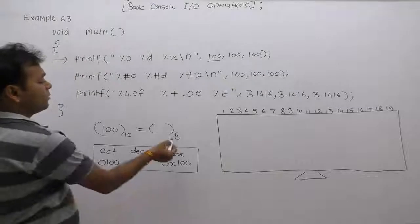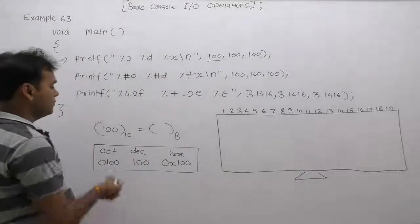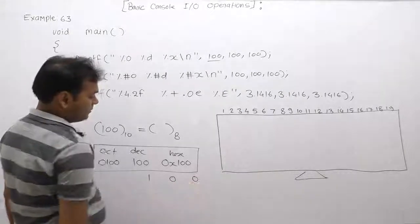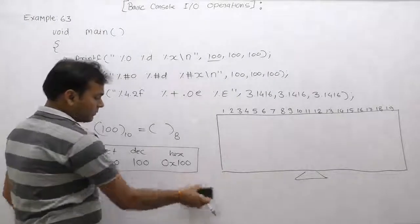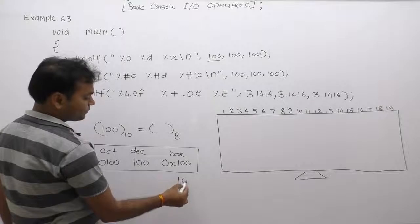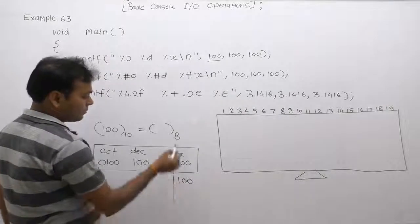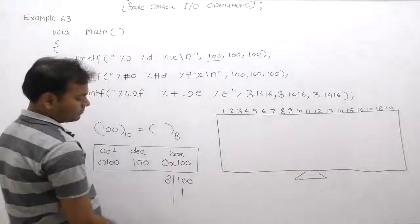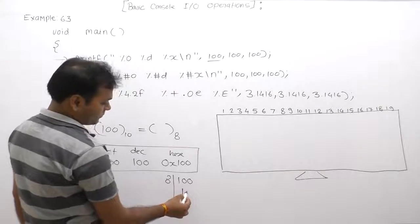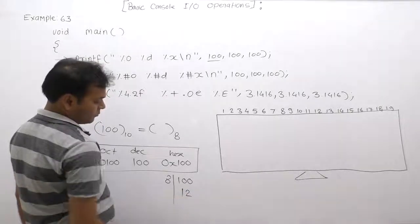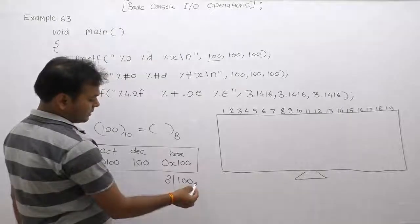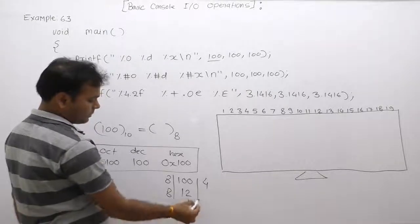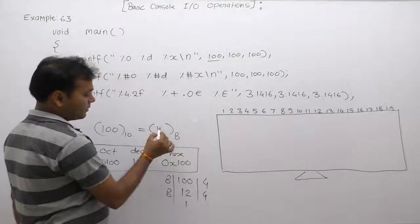First, we want to display 100 in the form of octal. To find the equivalent octal value, we divide 100 by the required base, which is 8. Dividing 100 by 8: the quotient is 12 with remainder 4; dividing 12 by 8: quotient is 1 with remainder 4; dividing 1 by 8: remainder is 1. So the equivalent octal number is 144.